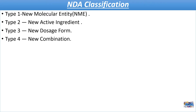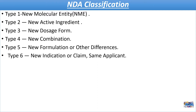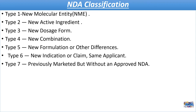Type 4: New Combination — a drug combination of two or more active ingredients. Type 5: New Formulation or other differences — a new dosage form that differs from a product that has been previously approved or marketed. Type 6: New Indication or claim, same applicant — Type 6 is no longer used; it has been replaced with Type 9 and Type 10. Type 7: Previously marketed but without an approved New Drug Application.